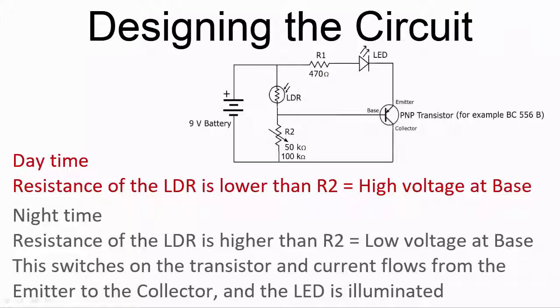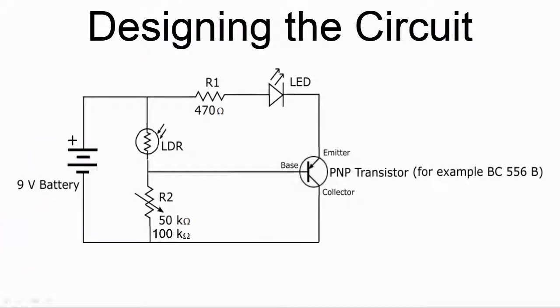This switches on the transistor, and current flows between the emitter and collector, which completes the circuit and illuminates the LED.